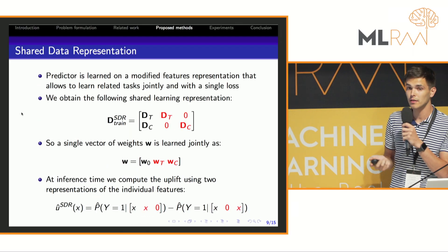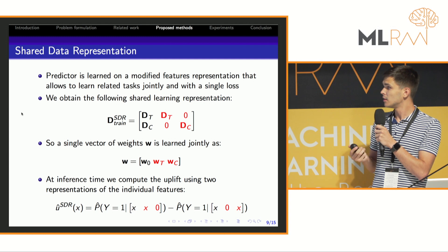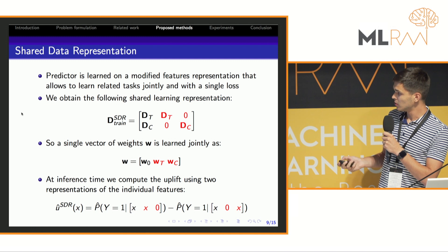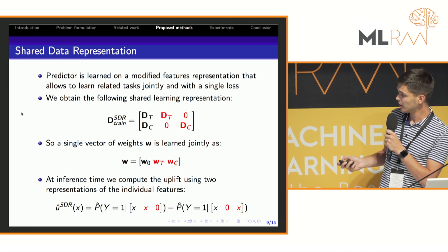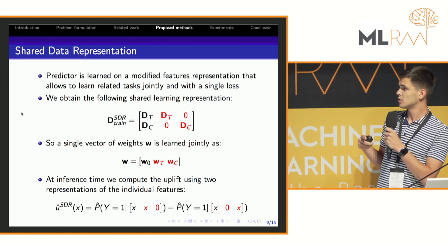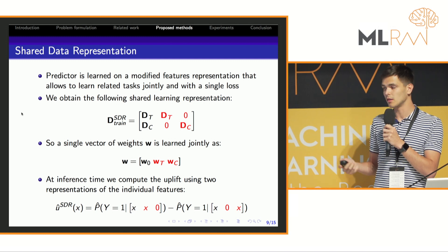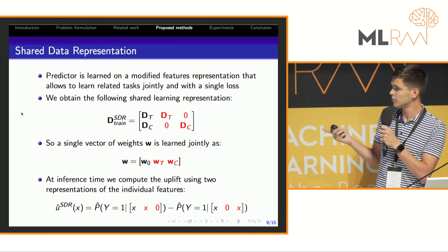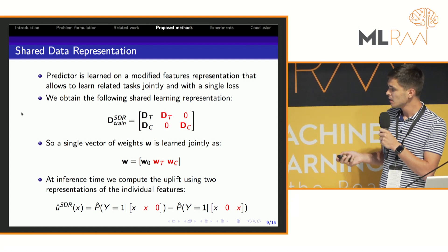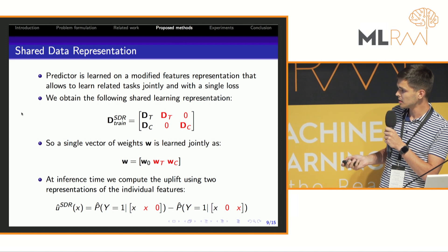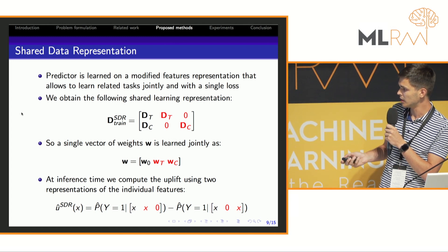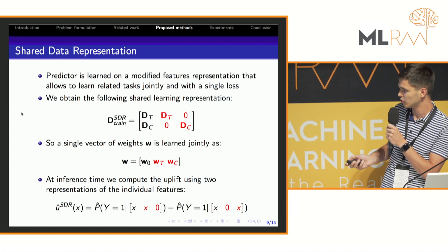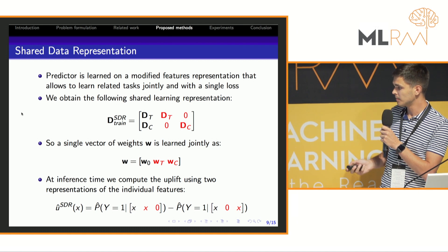The second method, Shared Data Representation or SDR, is some kind of data augmentation for this task. Here you can see the modified dataset which allows us to learn related tasks—in our case, two groups T and C—jointly and simultaneously with a single loss. In this case, weights vector w includes treatment and control parts of weights.